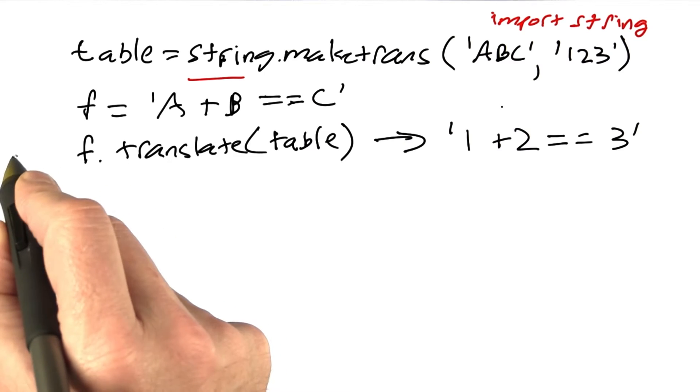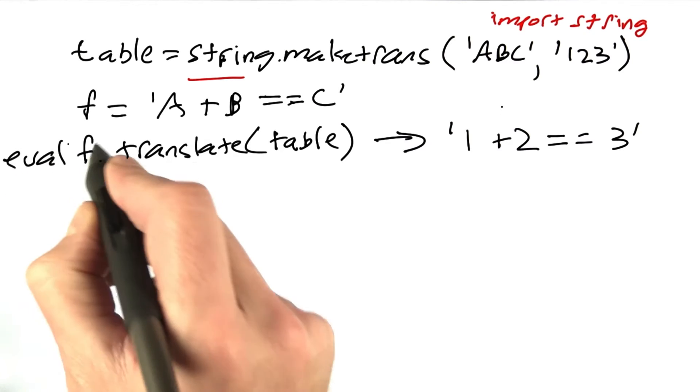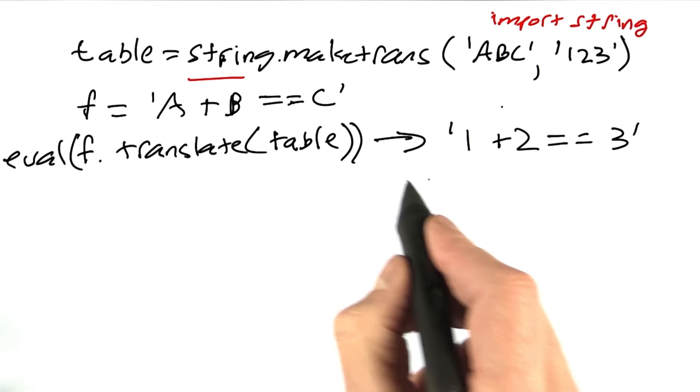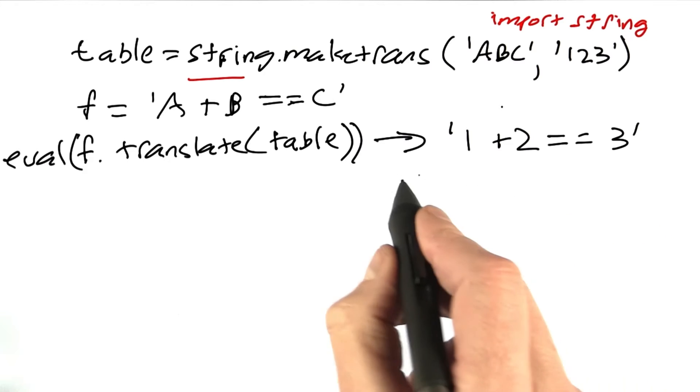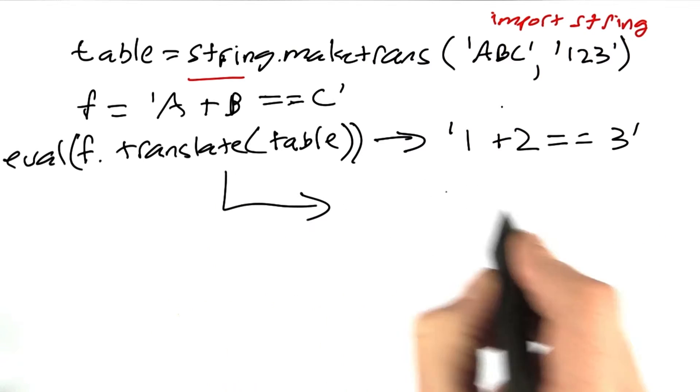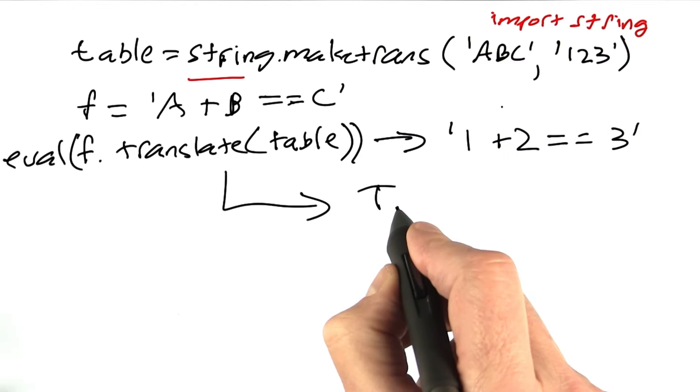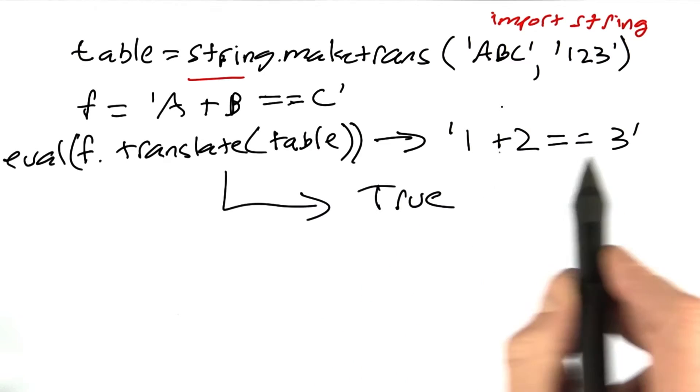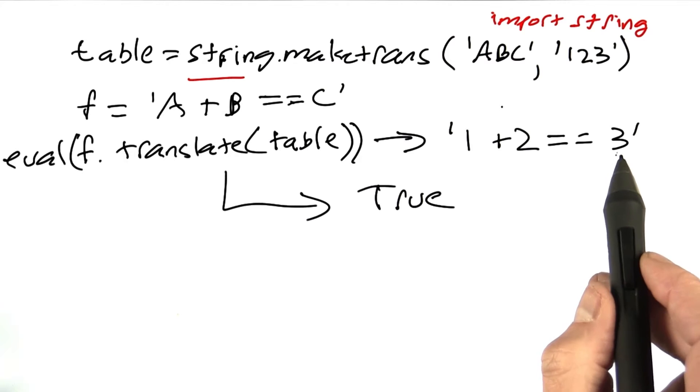And now if I go ahead and evaluate f.translate(table), which is 1 plus 2 equals 3, then that will give me the result true. Because 1 plus 2 is 3, and that's a legal Python expression.